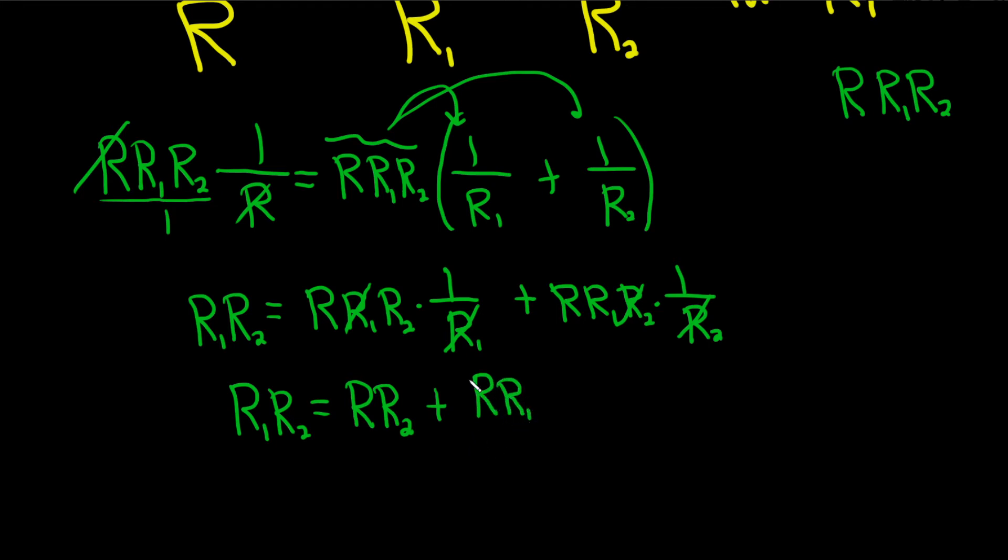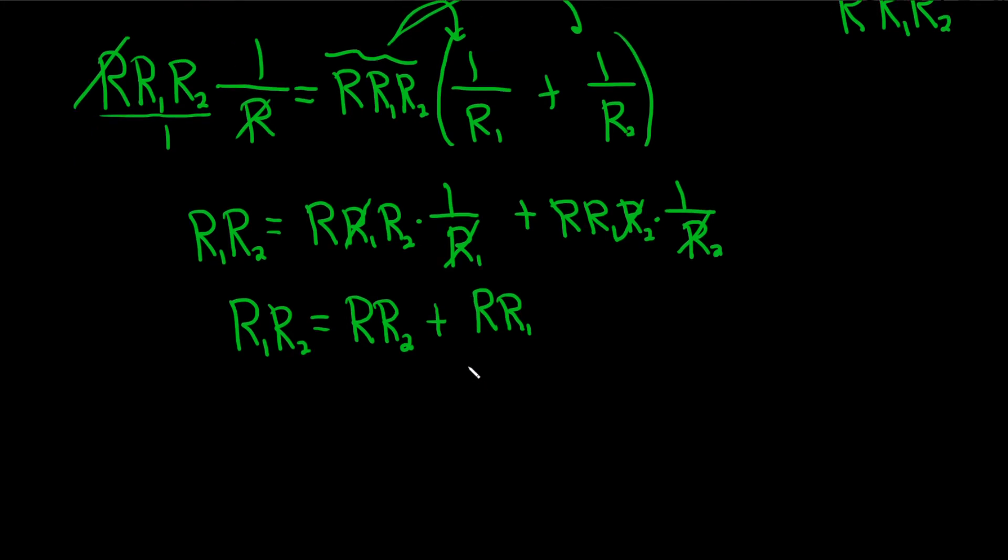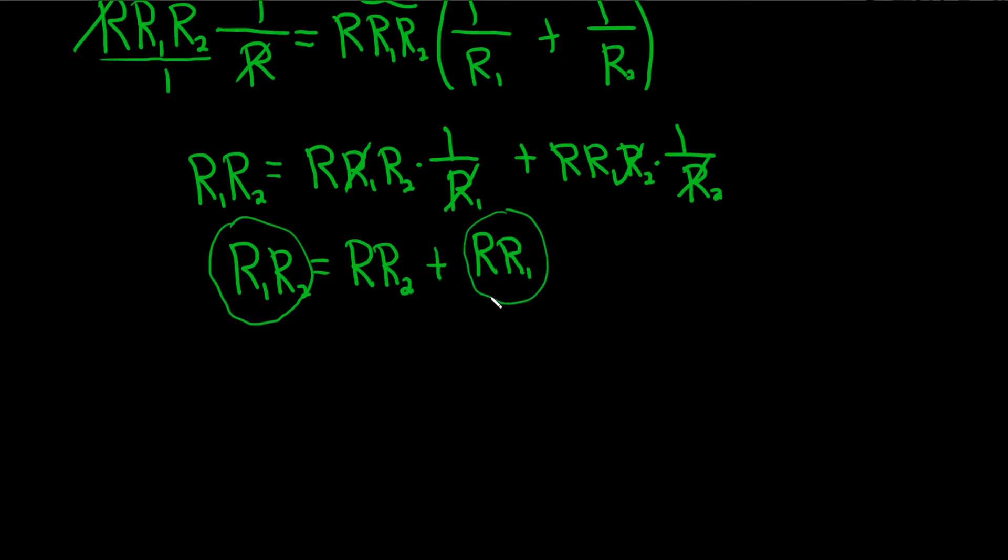We're looking for R1, but the problem is there's one here and there's one here. So we want to get all of them together on one side. So what we'll do is we'll subtract this piece here. This is a plus R, R1, so I'll do a minus R, R1 to both sides. So we have R1, R2 minus R, R1 equals R, R2.